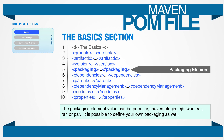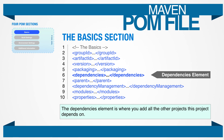You can also define your own packaging types, but that's not something that we'll go into for this class. The dependencies element lists all the Maven coordinates required to compile our project. When we need to add a new dependency, we will add a new coordinate to this section. We're going to cover this a lot more in a bit.